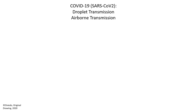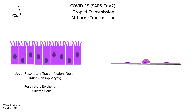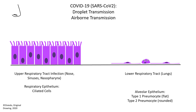COVID-19 can be transmitted by droplets and airborne. Here I've drawn a nose because for today's example I'm going to use airborne transmission into the nose. This drawing represents the lining of the respiratory tract. On the left, this represents the upper respiratory tract — basically the nose, the sinuses, and the nasopharynx — which is lined by respiratory epithelium, shown here as ciliated cells. On the right, these cells represent the lower respiratory tract, or the lungs.